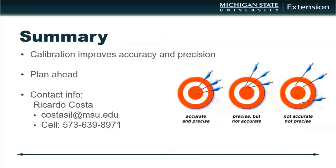That's all I have. As a summary: calibration improves accuracy and precision, so if you want to use that data, your yield monitor needs to be calibrated. Plan ahead — it does take some time to do calibration, and it might seem like a pain. But whether it's corn, soybean, or wheat, it pays in the end because you want to make sure you don't have garbage data. Thank you.